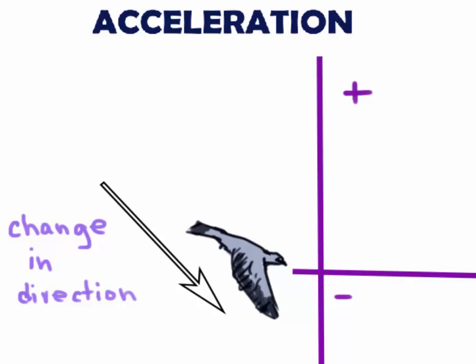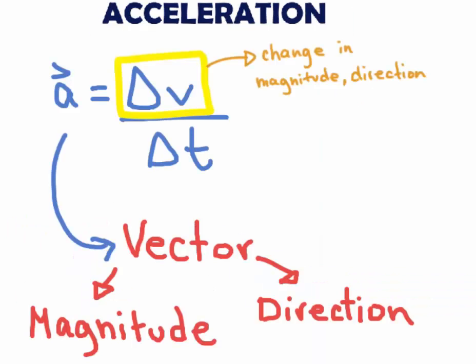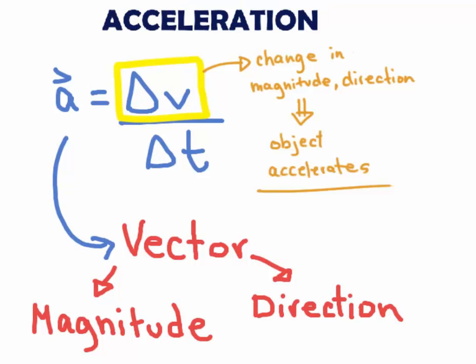So if the bird dives down it flies in a negative direction with a negative velocity. Acceleration is a change in velocity either in magnitude or direction or both over time.